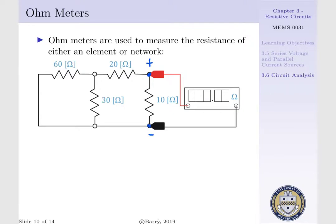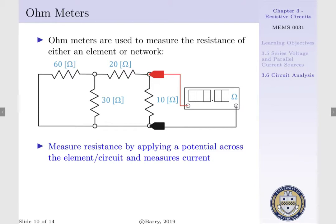Ohmmeters work by applying a potential across the element or circuit and measuring the current running through it. At the positive lead, we apply a voltage potential with the negative lead being the return, and we allow current to flow through. The resistance is calculated via Ohm's law: R equals the voltage potential divided by the current flowing through the device.